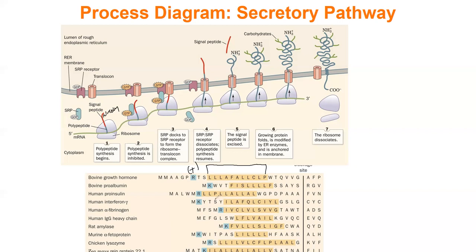When the signal peptide emerges from the ribosome, SRP — which is just a protein — comes and binds the signal peptide. When SRP is not bound to the ribosome it has GDP bound, but when it binds to the ribosome it switches that GDP for GTP. What SRP does is stop the protein from further being synthesized — it basically pauses the ribosome — because if the ribosome continued, the protein would be born into the cytoplasm, but it needs to be in the membrane.